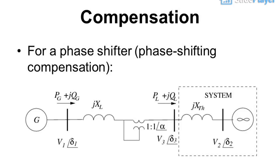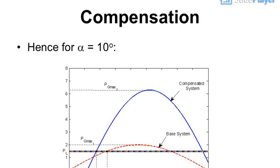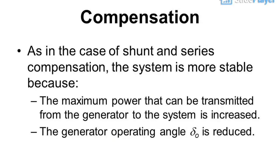For a phase shifter (phase shifting compensation), as in the case of shunt and series compensation, the system is more stable because the maximum power that can be transmitted from the generator to the system is increased, and the generator operating angle δ is reduced.